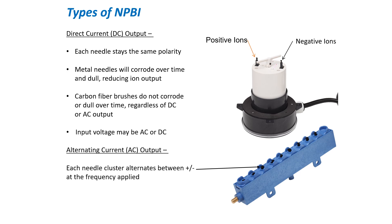With alternating current ionization systems, each individual brush cluster alternates between positive and negative based on the frequency applied — 60 Hz in the United States, 50 Hz in Europe. What sticks on one cycle will repel on the next. With our AC devices, you'll notice a wave pattern molded into the device — at the peak of the wave is where the carbon fiber brushes are located. The airflow over these brushes doesn't directly impact the brush with particles, so you don't see the brushes getting dirty from particle impaction. Because it's AC, it's static neutral, so it's not drawing particles to it the way DC technology does, which is why self-cleaning is so critical in direct current systems.